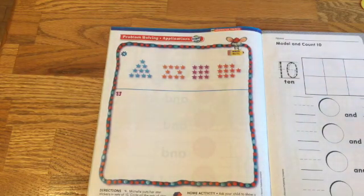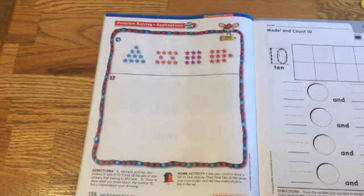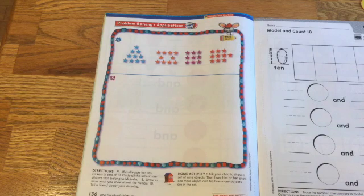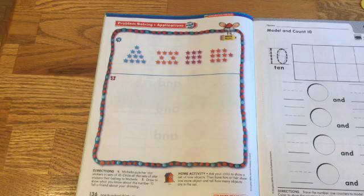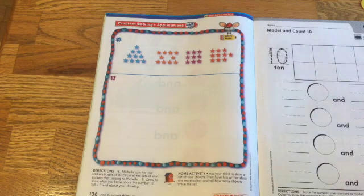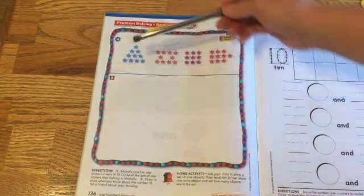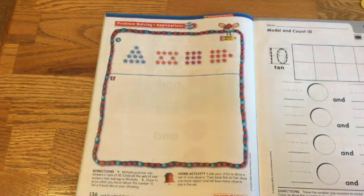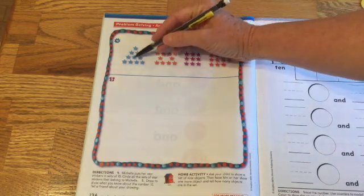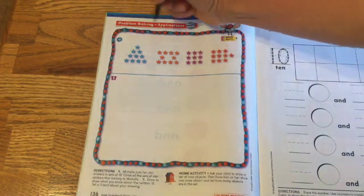All right, boys and girls. Up here, we're on page 136 with the mouse. Michelle puts her star stickers in sets of ten. Circle all the sets of star stickers that belong to Michelle. Down here, draw to show what you know about the number ten. So with the stars, you're going to count them. Now, what I've seen is sometimes students start in the middle and they forget to mark them. And then you get confused and you might count too many or not enough.